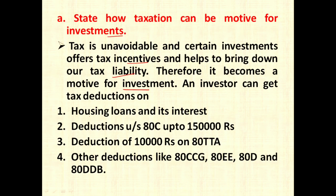An investor can get tax deductions on housing loan and its interest — you get deduction under income from house property and under 80C you get deduction on repayment of loan. You also get deductions under section 80C for investments up to 1,50,000 rupees in fixed deposits, mutual funds, and other government schemes. A deduction of rupees 10,000 is available under 80TTA if you invest in a savings bank account. Other deductions include 80CCG for equity savings, 80EE, 80D for mediclaim, and 80DDB for mediclaim policy of dependents. These also act as a motive for investment.